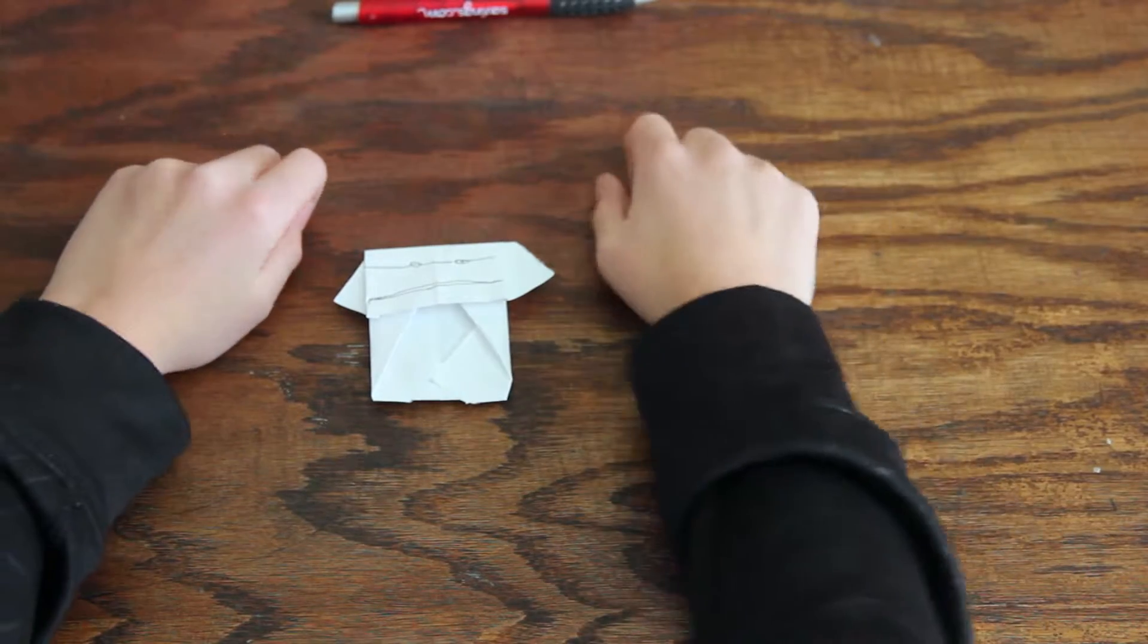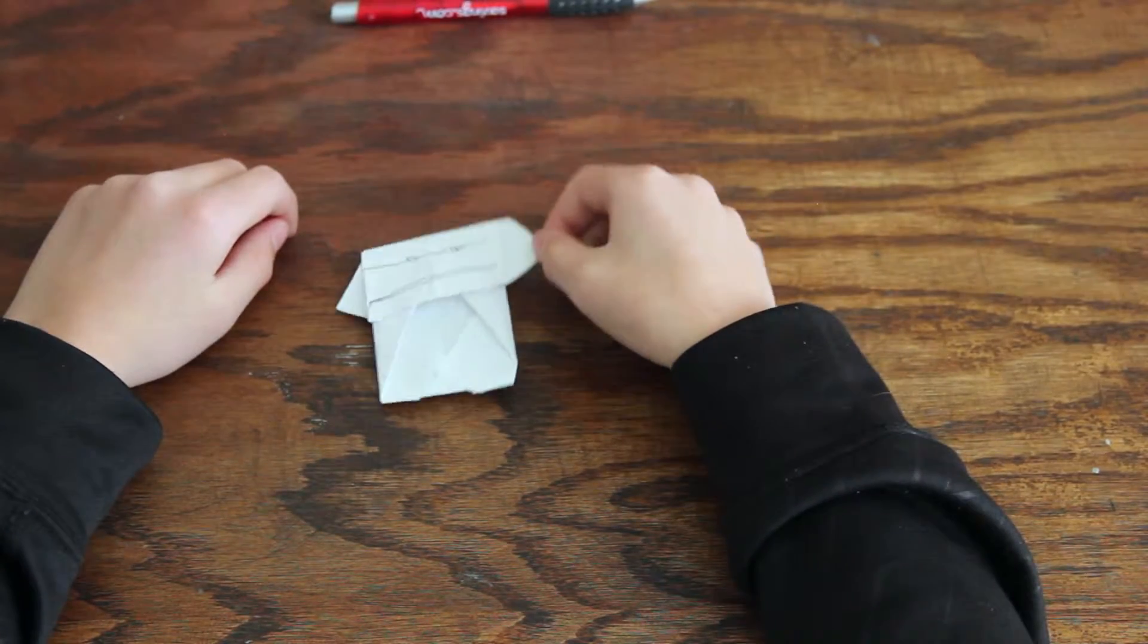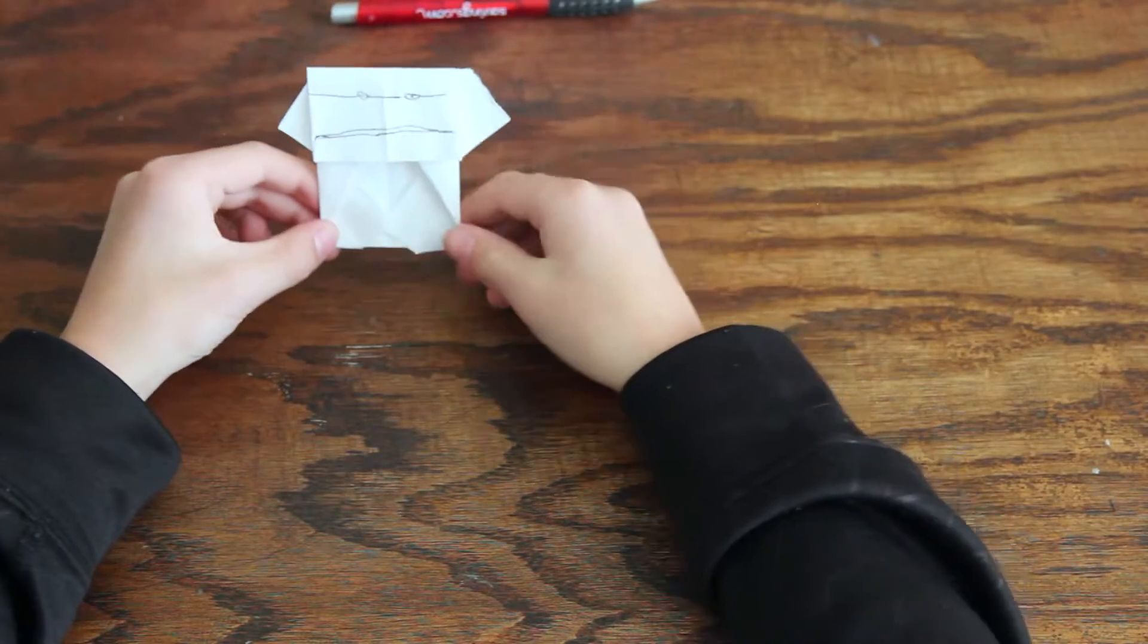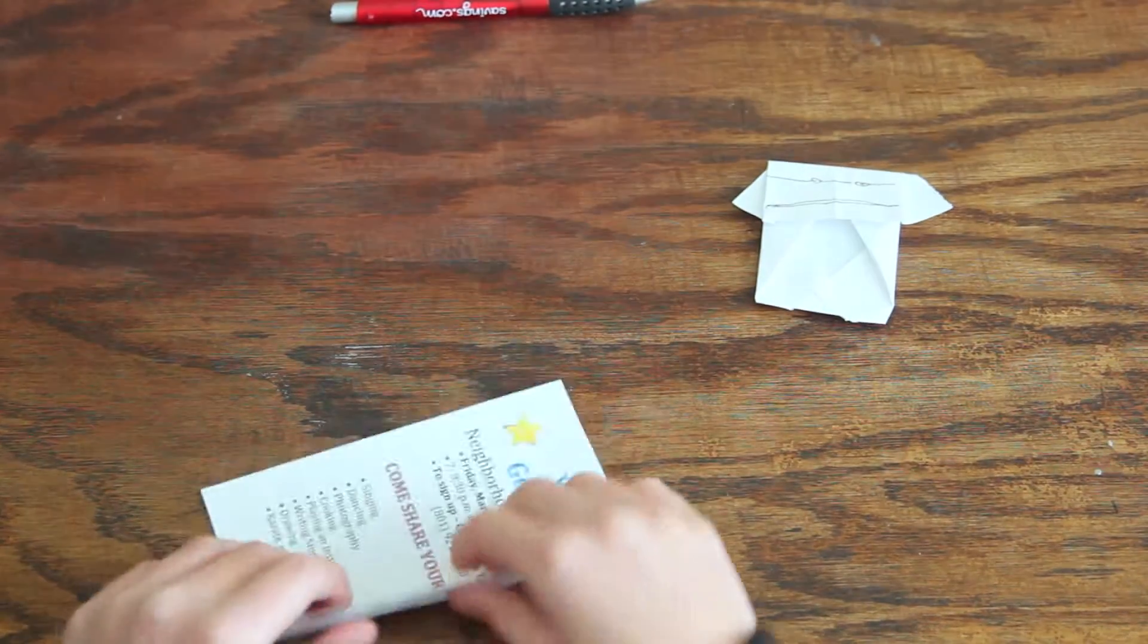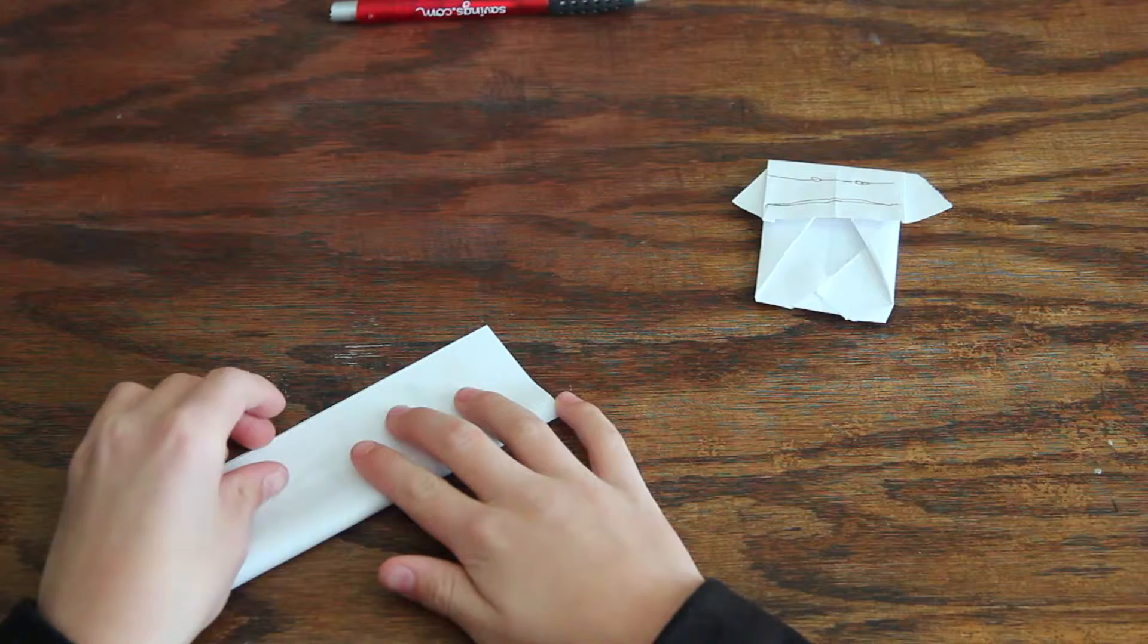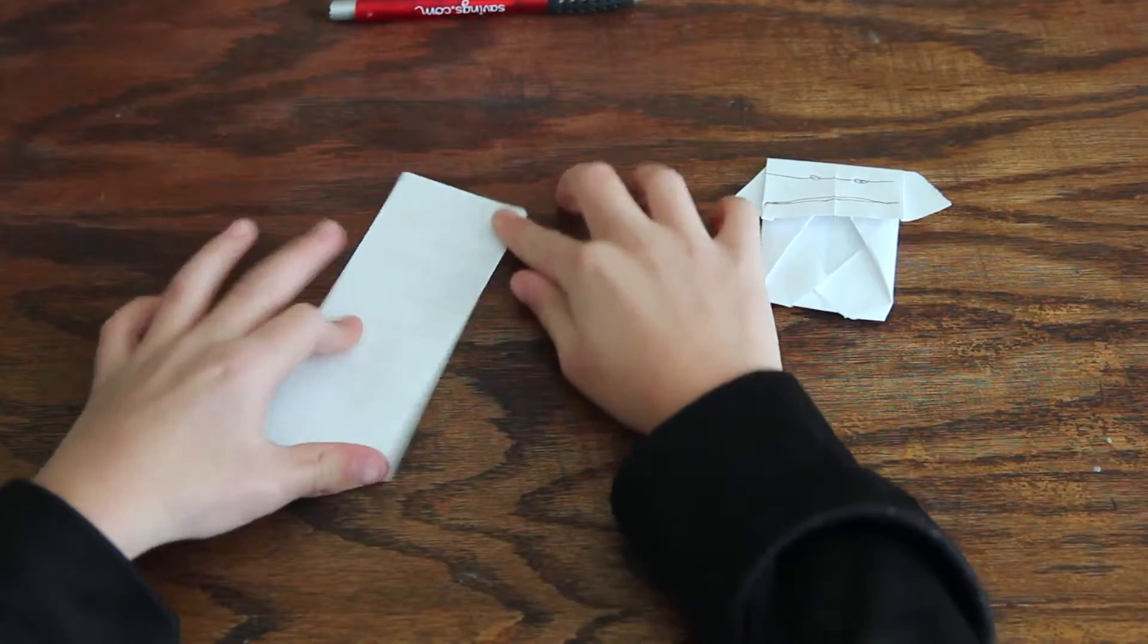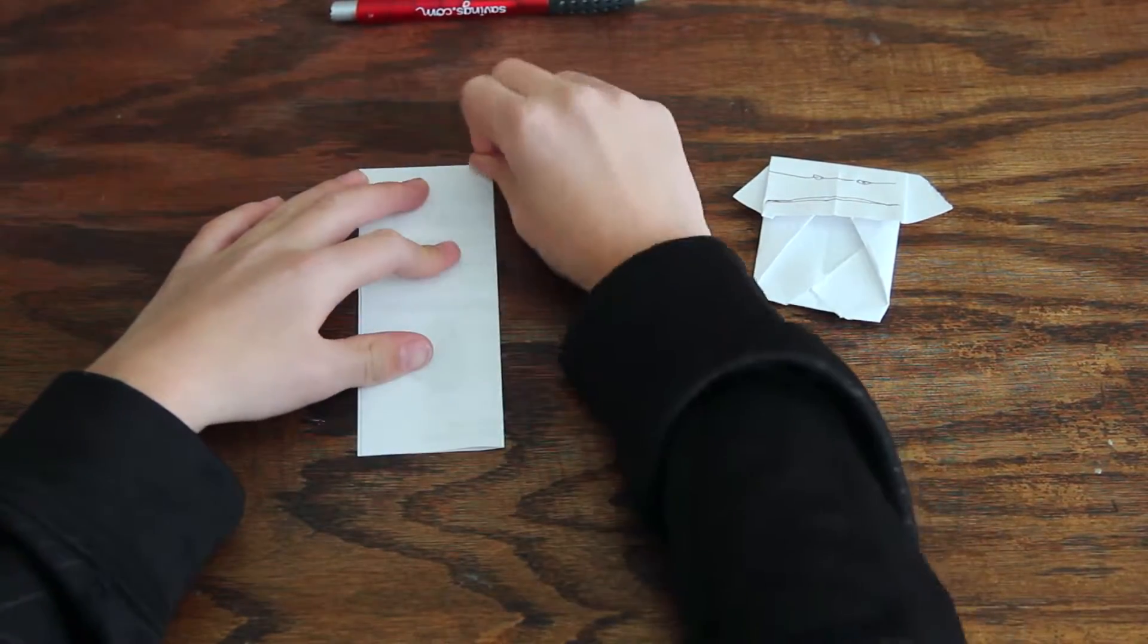Hello superfolders, I'm going to teach you how to fold the almost real origami Yoda. So first you get a quarter sheet of paper and fold it in half so it's straight up and down like this. Crease it good.